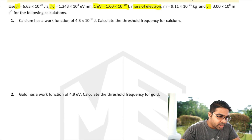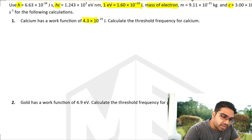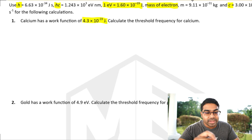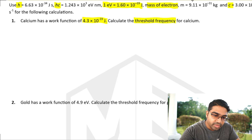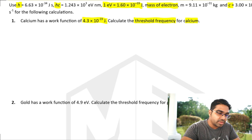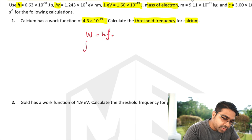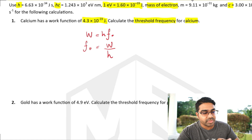Let's look at number one. Calcium has a work function of 4.3 times 10 to the power of minus 19 joules. Calculate the threshold frequency for calcium. The formula that relates the two is W equals H times the threshold frequency. Rearranging, threshold frequency equals W over H.